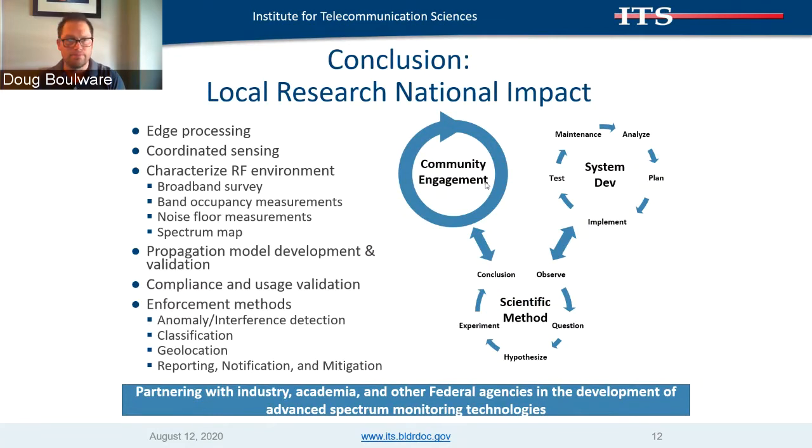Thank you. I'll open it up to questions. The frequency range capability for SCoS is dependent on the specific sensors. The inexpensive Greyhound sensor has been focused on monitoring the 700 MHz band. The mid-range sensor goes up to close to 6 GHz, though I'd check with Mike Cotton on those specifics — he handles that side of things.